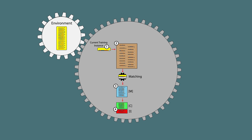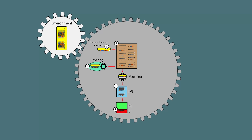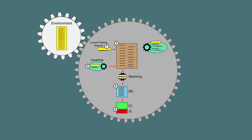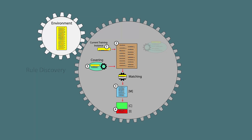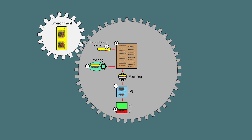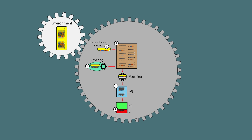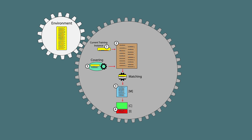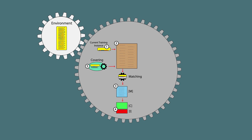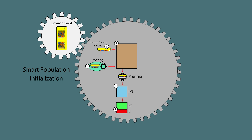At this point, if no rules made it into the correct set, then the covering mechanism is applied. Covering is one of the two mechanisms that can introduce new rules into the population, also known as rule discovery. Covering ensures that LCS explores rules that cover all parts of the data space while preventing LCS from wasting time exploring rules that wouldn't match anything in the data. Different from most other evolutionary algorithms, LCS rule populations typically start off empty. Because of this, covering serves as a form of smart population initialization.